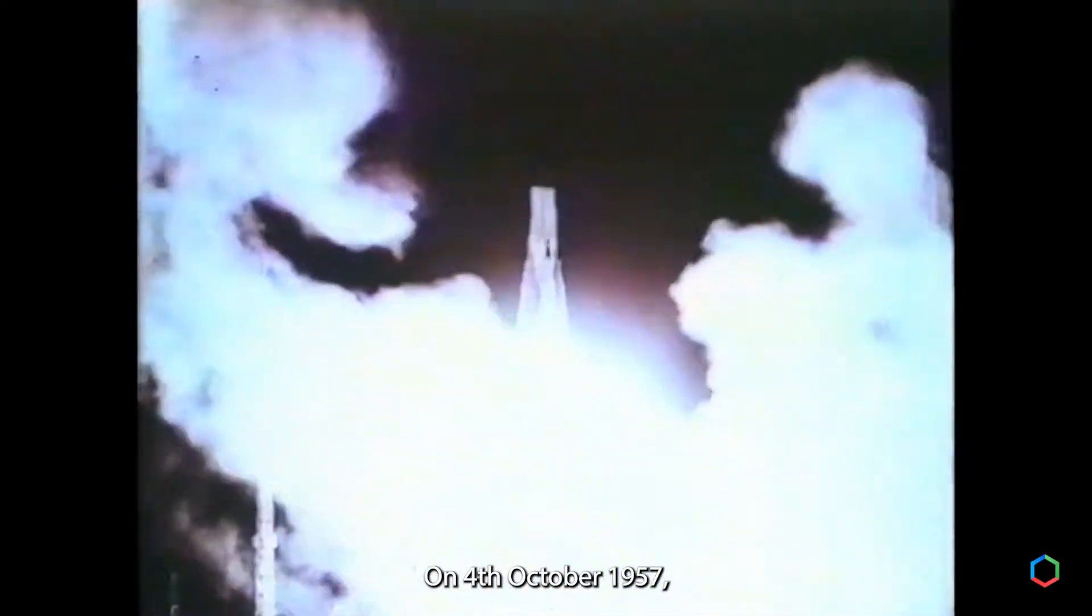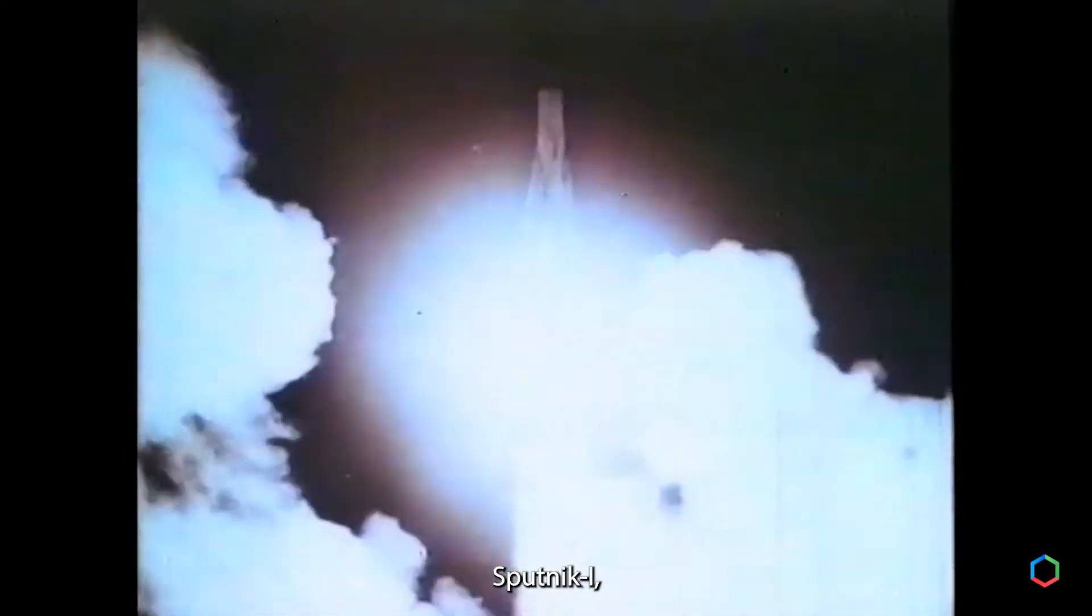On 4th October 1957, Sputnik 1, the first artificial satellite, was launched.